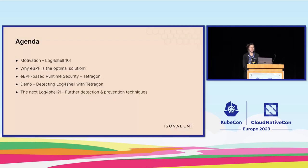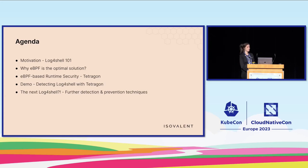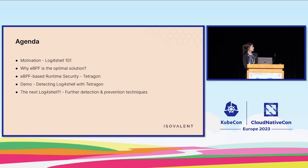A little bit about the agenda. We will start with a motivation — a quick recap of what Log4Shell is in a one-on-one, because I'm not a Java developer, so I can't go into very much detail. Then we'll see why eBPF would be the optimal solution to detect that, look at the open-source tool Tetragon, do a deep dive and demo, and finish with further detection and prevention techniques, because there will be many more vulnerabilities coming.